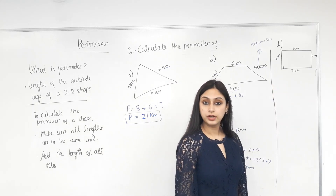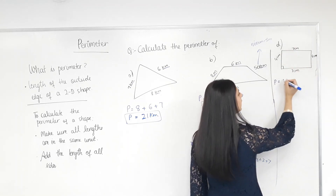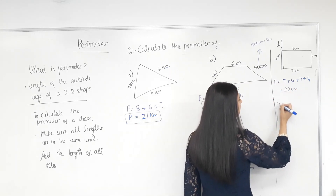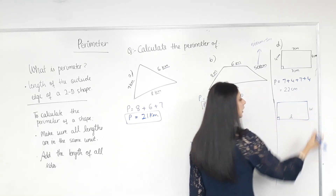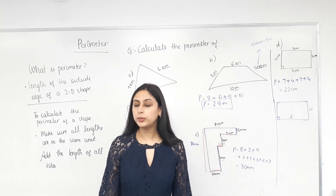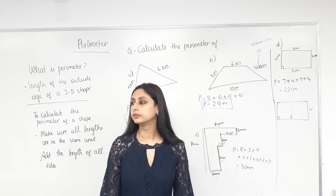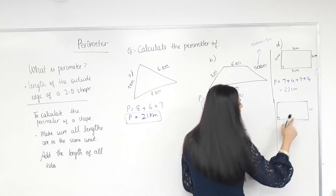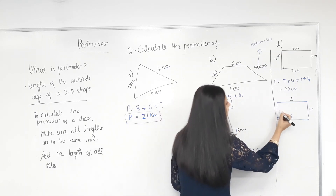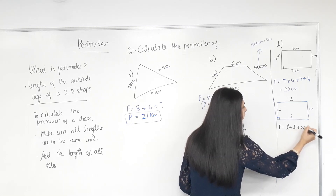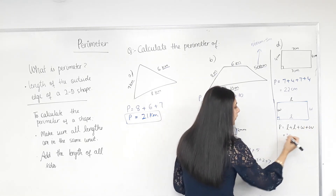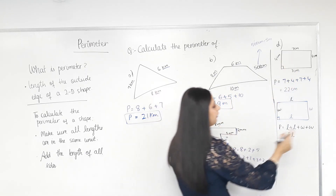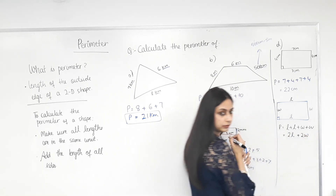Now, which shape is this? A rectangle. What's the perimeter? Can I add all sides? Yes — same units. If I give you a rectangle with just length L and width W, can you come up with a formula? P equals L plus W plus L plus W. Opposite sides of a rectangle are equal, so rather than adding L twice, can I write 2L? Because 7 plus 7 is 14 and 2 times 7 is 14 as well. And rather than adding width twice, just write 2W. So the formula is P = 2L + 2W.